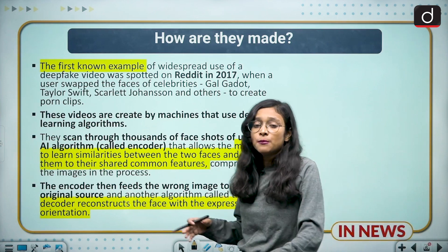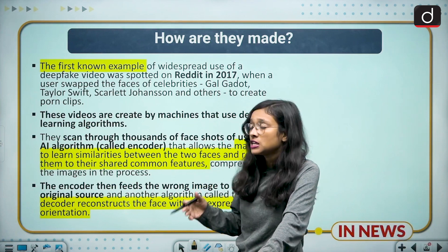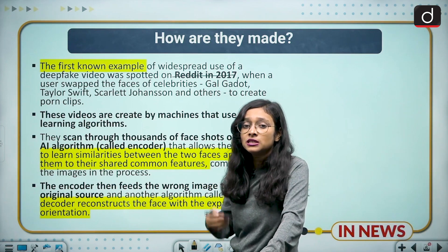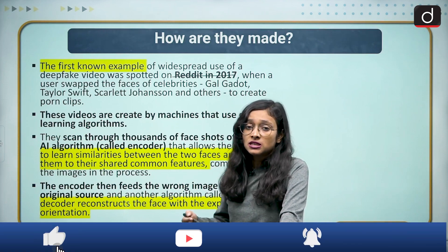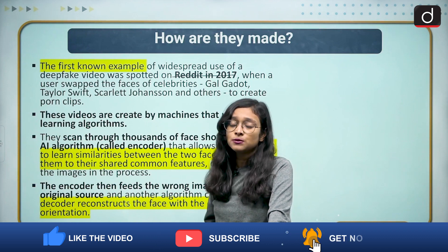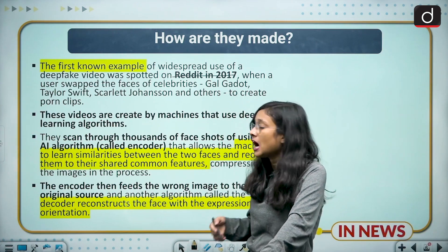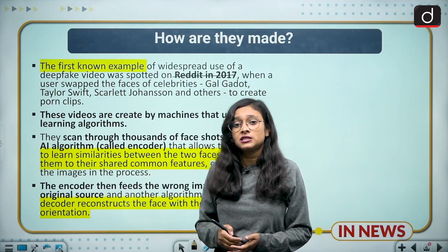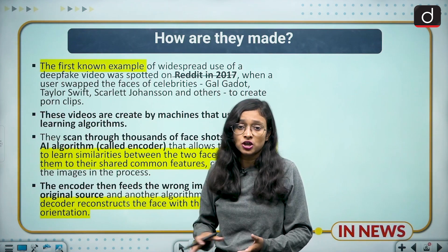The first example of a deepfake video was noticed around 2017, made on Reddit, in which various celebrities' images were used to make pornographic clips — such as Gal Gadot and Taylor Swift. Their images were used to make porn clips. First evidenced in 2017, it has since become very frequent.